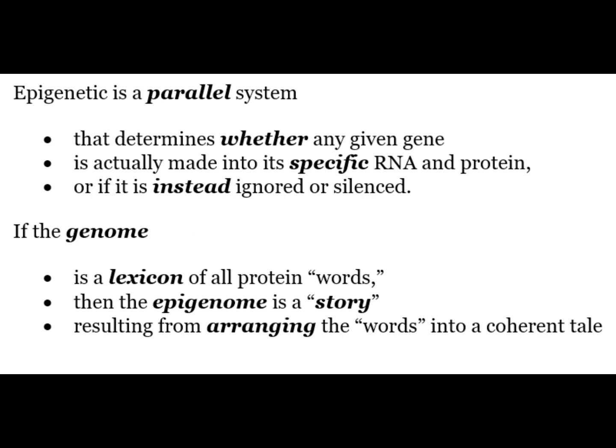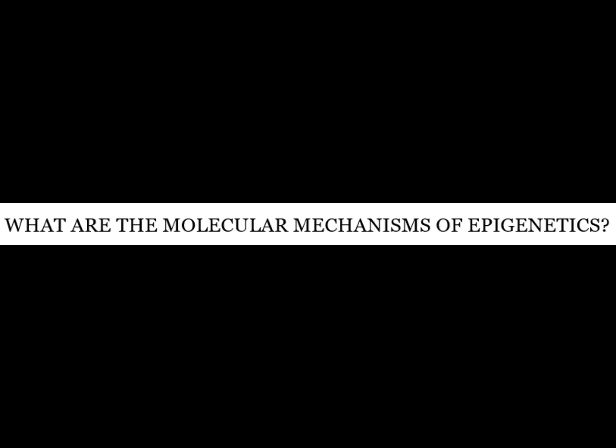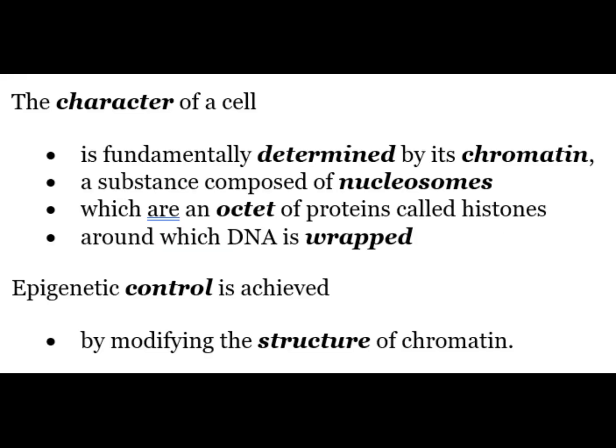Epigenetics is a parallel system that determines whether any given gene protein is actually made into specific RNA and protein, or if it is instead ignored or silenced. If the genome is a lexicon of all protein words, then the epigenome is a story resulting from arranging the words into a coherent tale. The character of a cell is fundamentally determined by its chromatin, a substance composed of nucleosomes, which are octamers of proteins called histones around which DNA is wrapped.